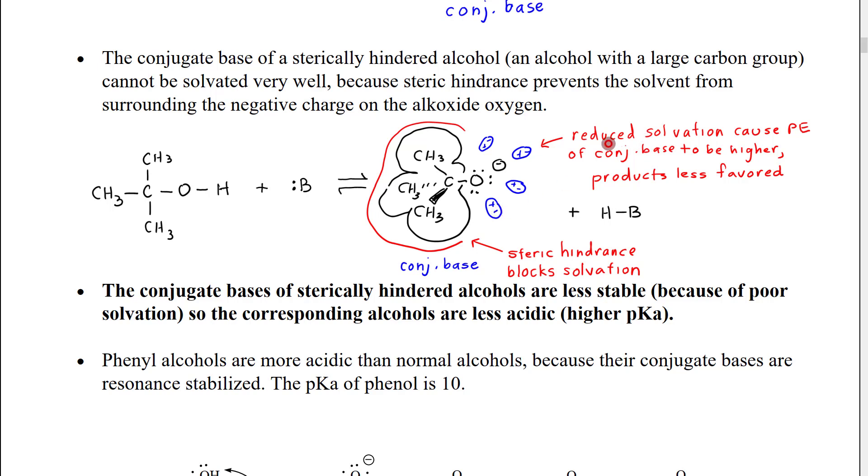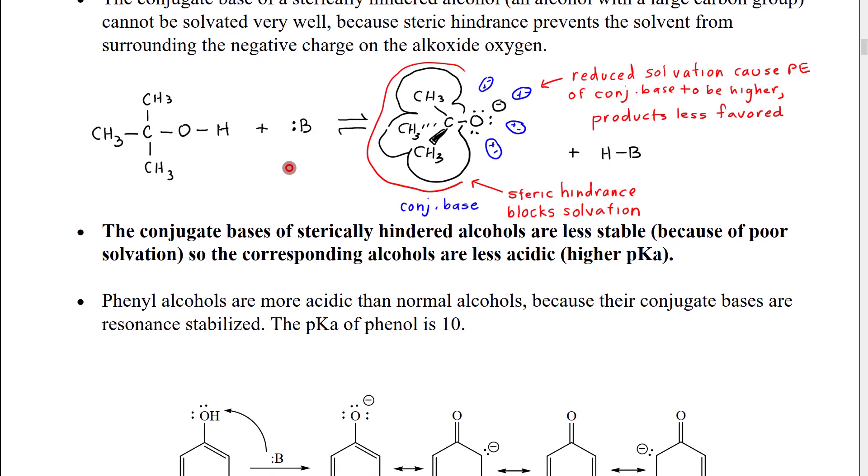Because of that reduced solvation, this is going to have a higher potential energy compared to, like, the methyl oxide ion. Therefore, this reactant is going to be less likely to come over here. And when we look at our relative concentrations, there's going to be a lot lower concentration of this compared to what we started with than when we had more solvation. Therefore, this is not going to react as readily as an acid. It's going to be a weaker acid.